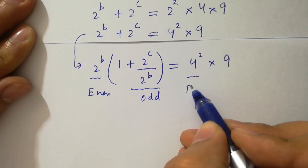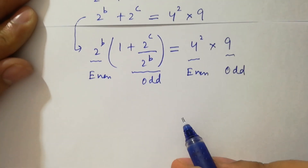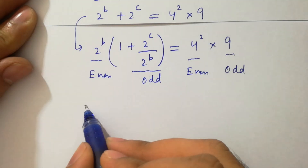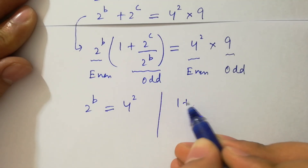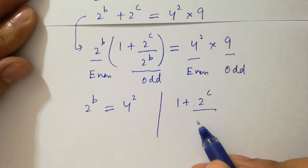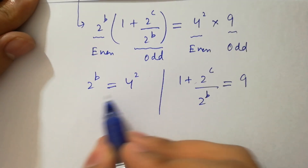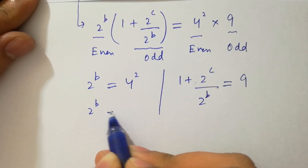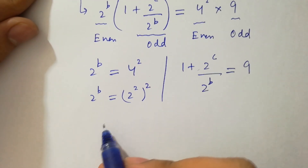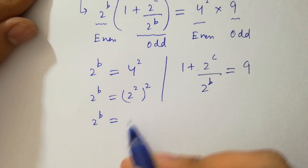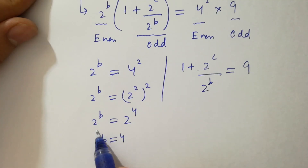Here 2 to the power b is an even number and 9 is an odd number. 4 squared is an even number and 9 is an odd number. So by comparing both sides we have 2 to the power b equal to 4 squared, which is 2 to the power 2 to the whole power 2, giving 2 to the power 4. So the value of b is equal to 4.